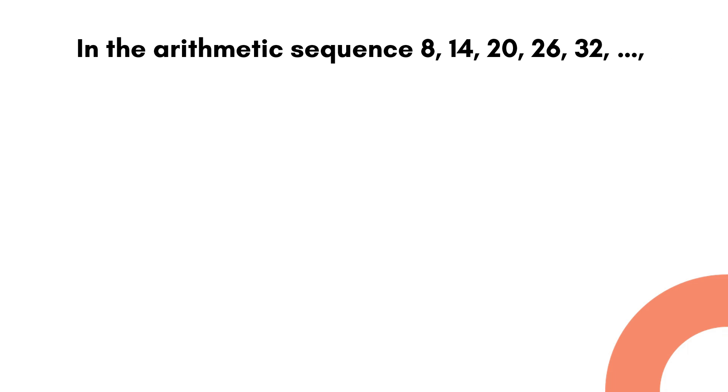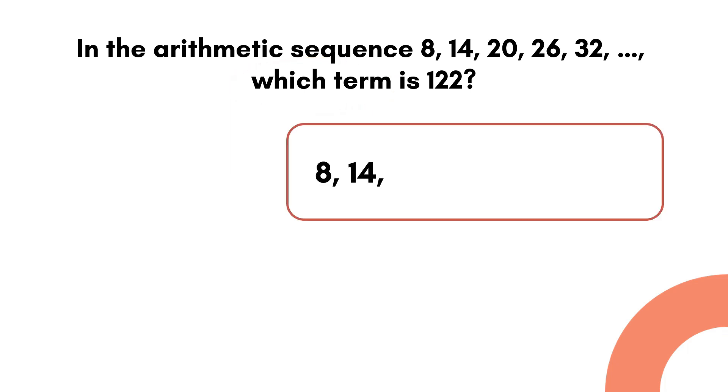Now, let's discuss the second example. In the arithmetic sequence 8, 14, 20, 26, 32, which term is 122? Which term meaning we are going to find the nth position of 122 in the sequence. So, we have to find for n.